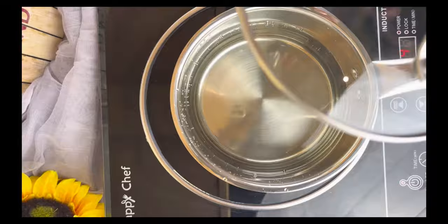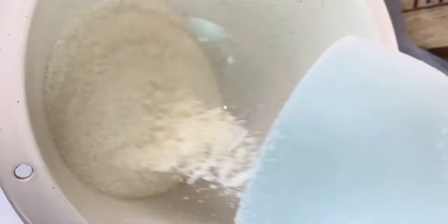Hi, let's make some pap today. So I boiled four cups of water with my lid on, and then I'm going to mix two cups of maize meal with two cups of water. Mix everything nicely and keep it aside.